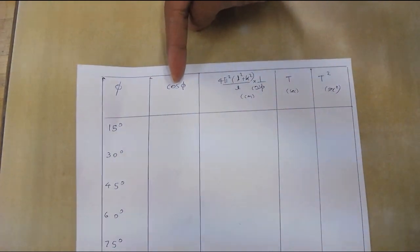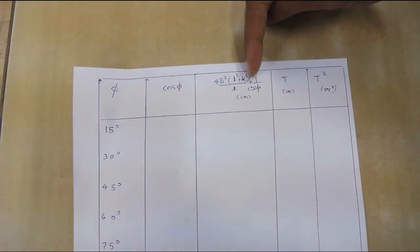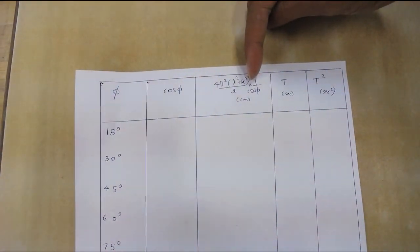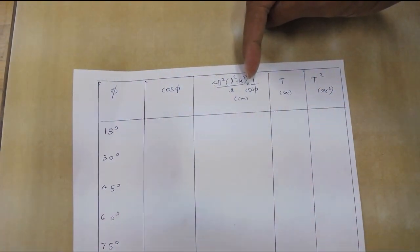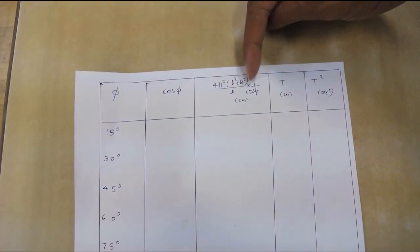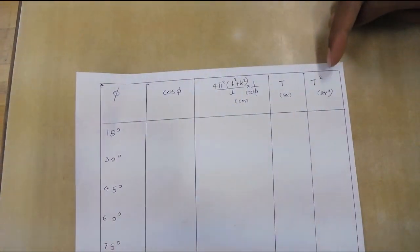Use the value obtained from previous sections for the radius of gyration k. Identify how effective g is changing with plane of oscillation.